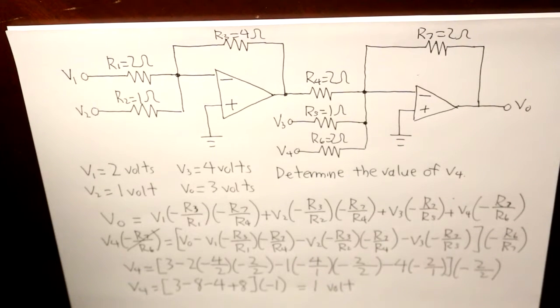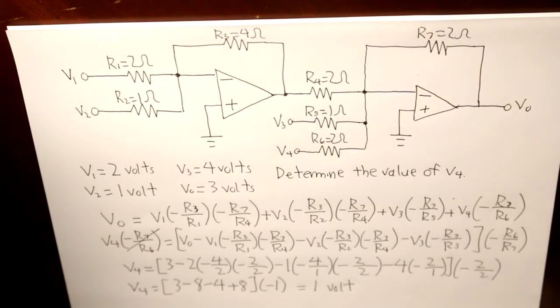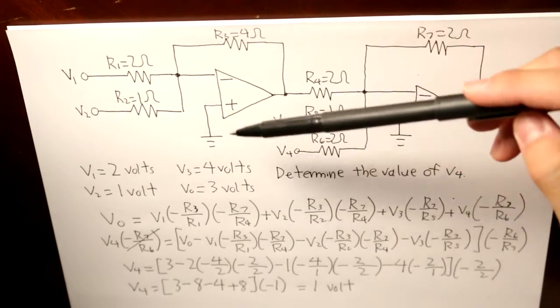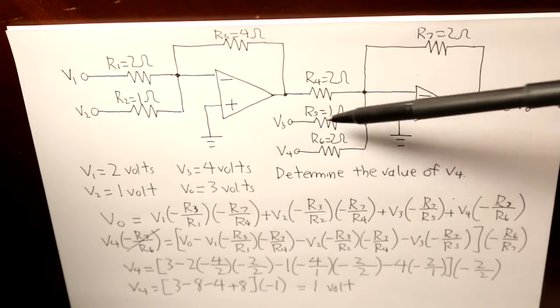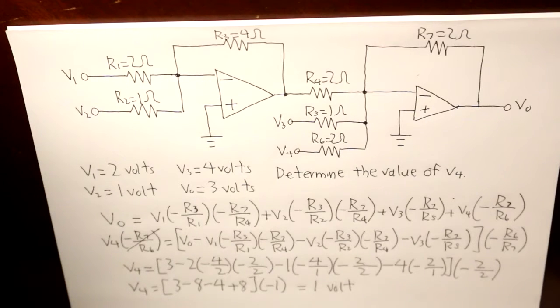And that is how we solve a weighted summer problem with two op-amps, two input voltages connected to the first op-amp, and the other two input voltages connected to the second op-amp. I hope you guys enjoyed this video, and I will see you guys in the near future.